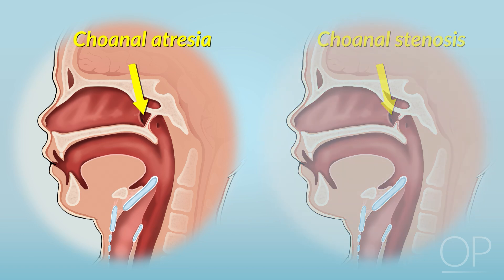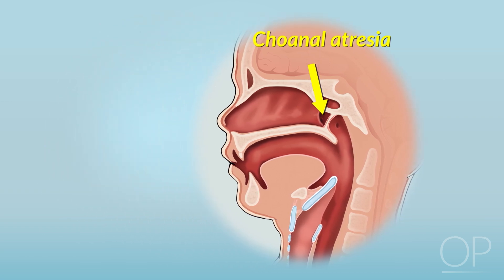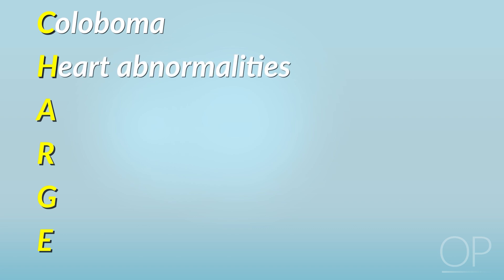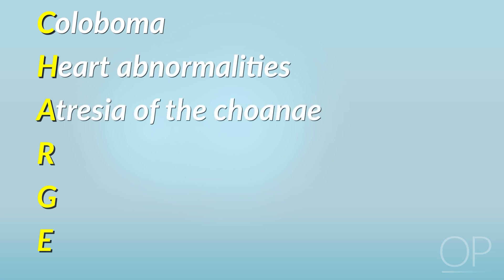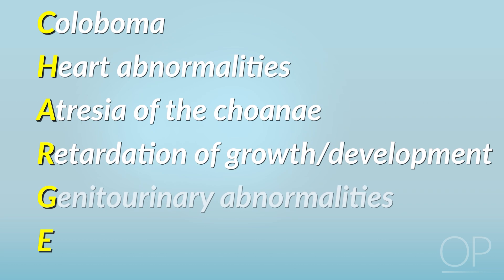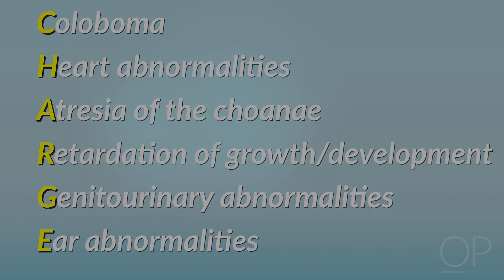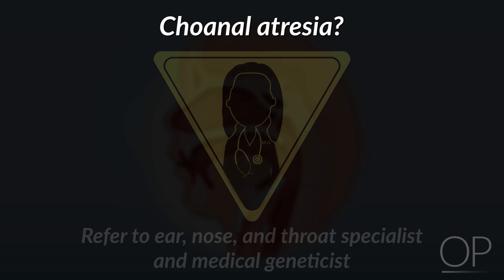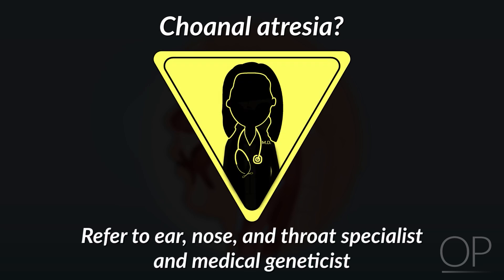Choanal atresia is a characteristic finding of the genetic condition CHARGE syndrome, which is an acronym for coloboma of the eye, heart abnormalities, atresia of the choana, retardation of growth or development, genitourinary abnormalities, and ear abnormalities. Any infant found to have choanal atresia should be referred to an ear, nose, and throat specialist, as well as a medical geneticist.